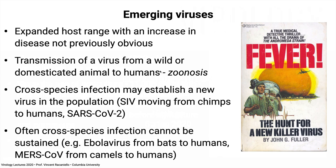Sometimes a zoonotic infection, or cross-species infection, is called a spillover from a non-human to a human. Sometimes this establishes a new virus in the population — for example, Simian immunodeficiency virus moving from chimps to humans in the 1920s. SIV was not a human virus when it infected the first humans; it was a zoonotic infection that then became a human virus, as did SARS-CoV-2.